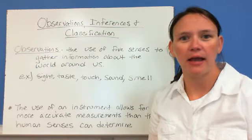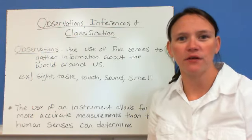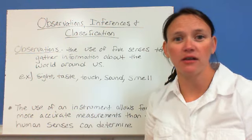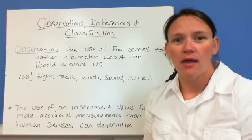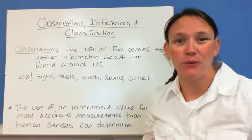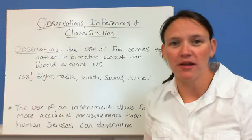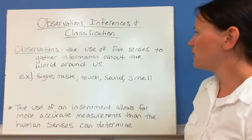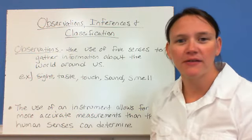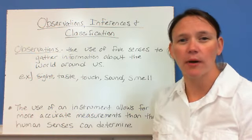We are going to take a look today at observations, inferences, and making classifications about different objects. Observations are something that we do every day in our everyday lives, not just something that we're going to be doing in earth science. Observations are the use of the five senses to gather information about the world around us.